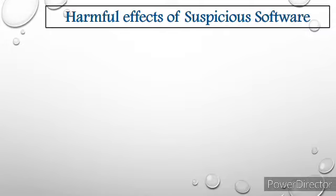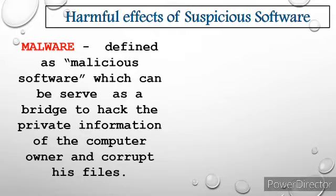Unlike the human body, a computer cannot create a system on its own that can fight and block the harmful effects of any downloaded software or applications, unless it is programmed. Malware is defined as a malicious software which can serve as a bridge to hack the private information of the computer owner and to corrupt his or her files. Malware can be obtained through external factors, such as opening suspicious websites, using infected storage devices like flash drive and memory card, or even accepting, opening, and receiving suspicious messages from your email account. Some of the various types of malware are the following.